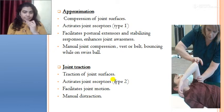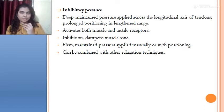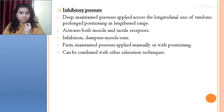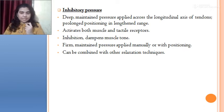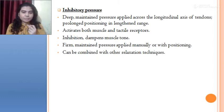Joint traction activates type 2 joint receptors, facilitates joint motion, and manual distraction is the example. Inhibitory pressure involves deep maintained pressure across the longitudinal axis of tendons with prolonged positioning in the lengthened range. It is applied on hyperactive muscles — for example, on elbow flexors or pronators. Sustained pressure at the lateral epicondyle inhibits the hyperactive muscle. It activates both muscle and tactile receptors, dampens muscle tone, and can be combined with other relaxation techniques.